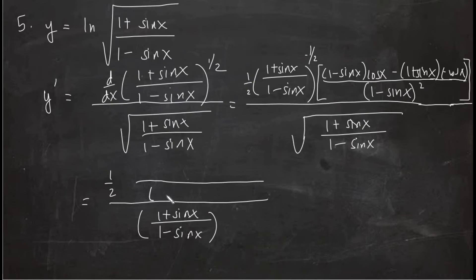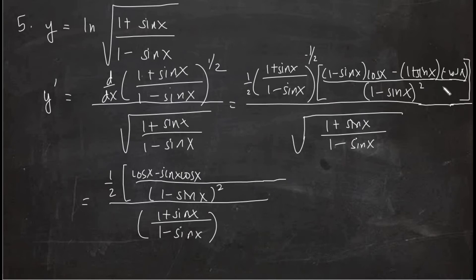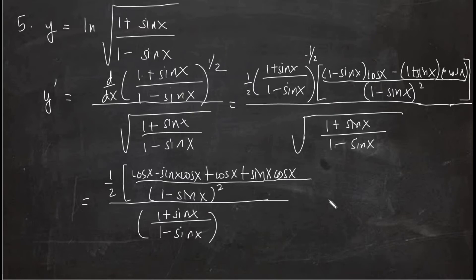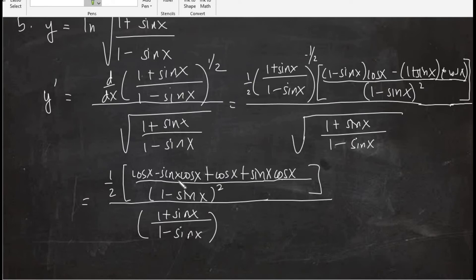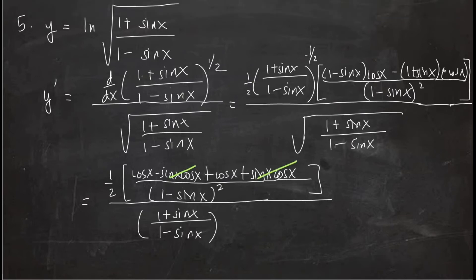Expanding the numerator of the quotient derivative: cos x − sin x cos x plus cos x + sin x cos x. The sin x cos x terms cancel, leaving 2 cos x. With the 1/2 factor, the 2 and 1/2 cancel. We also cancel one factor of (1 − sin x), continuing simplification on the next step.